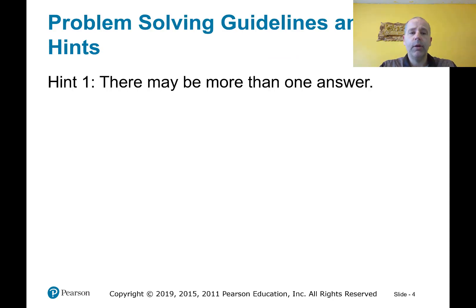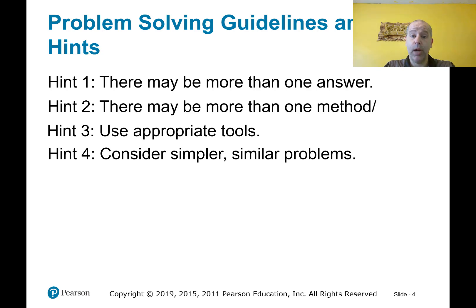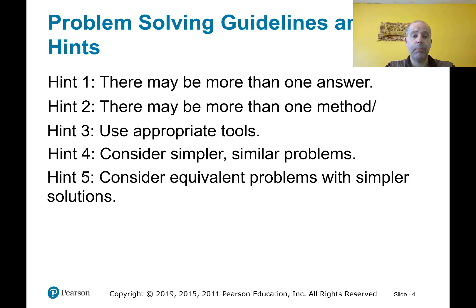Here's hint number one. There may be more than one answer. So these are some of the guidelines and hints that you want to pay attention to when you're working on problem-solving, word problems especially. There may be more than one answer. There may be more than one method. You've seen me actually do a couple of those where there was more than one way to get to the correct answer. Use appropriate tools. Four, consider simpler, similar problems, because the solution to those problems may help you with finding a solution to the more complicated problems. Hint five, consider equivalent problems with simpler solutions. Six, approximations can be helpful. You can approximate answers, and that will help you with determining whether you got the correct answer or not.